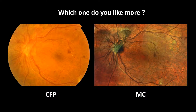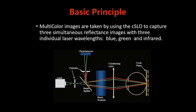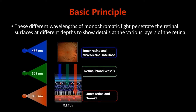What does multicolor image come from? Actually, multicolor images are taken by using the confocal scanning laser ophthalmoscope to capture three simultaneous reflectance images with three individual laser wavelengths, which is blue, green, and infrared. These different wavelengths of monochromatic light penetrate the retina surfaces at different depths to show details at the various layers of the retina.